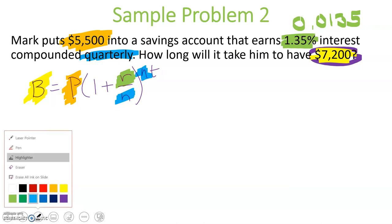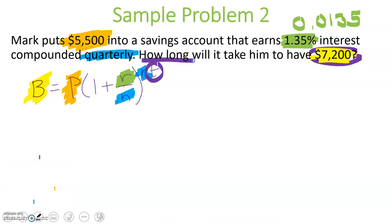Now, the only piece of information we do not have is our time t, how long. So let's go ahead, and we're going to plug in what we know. So 7,200 is equal to 5,500 times 1 plus 0.0135 over 4 to the power of 4t.